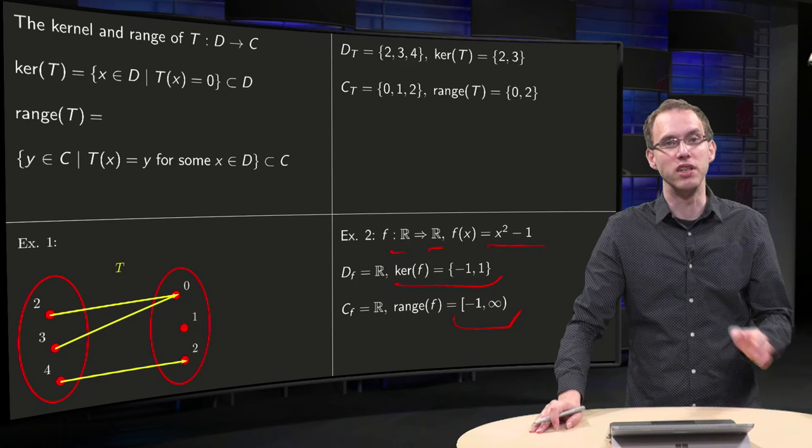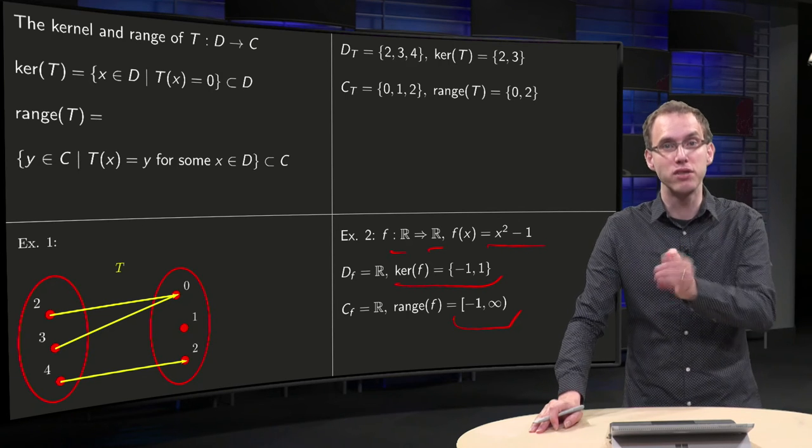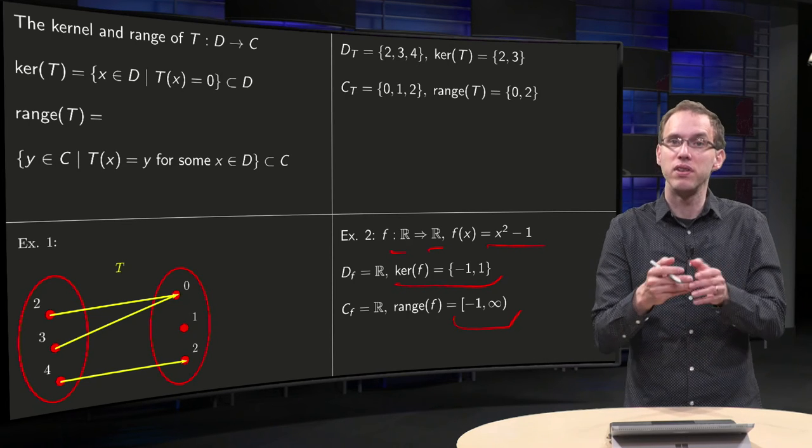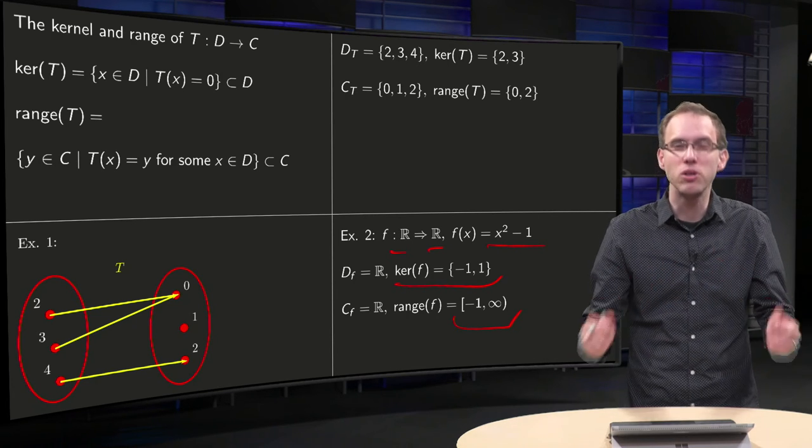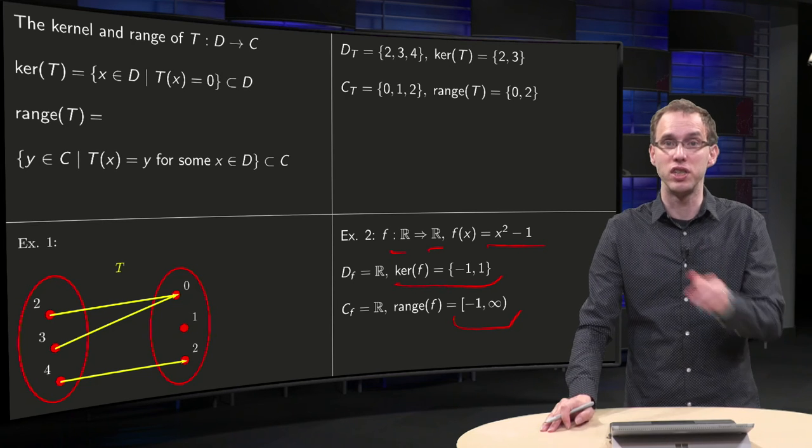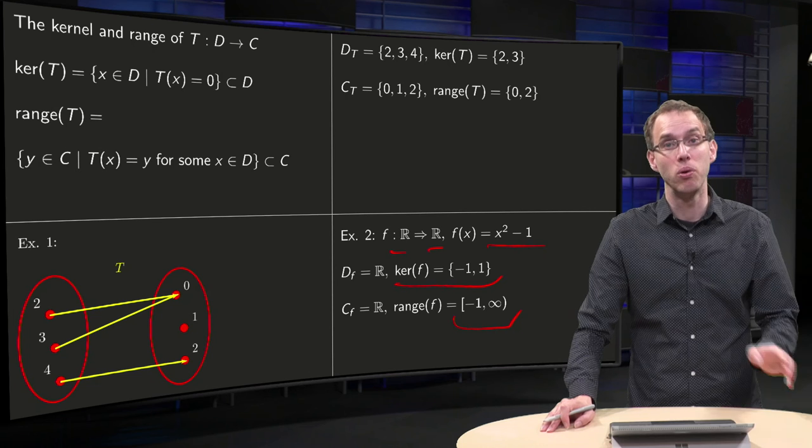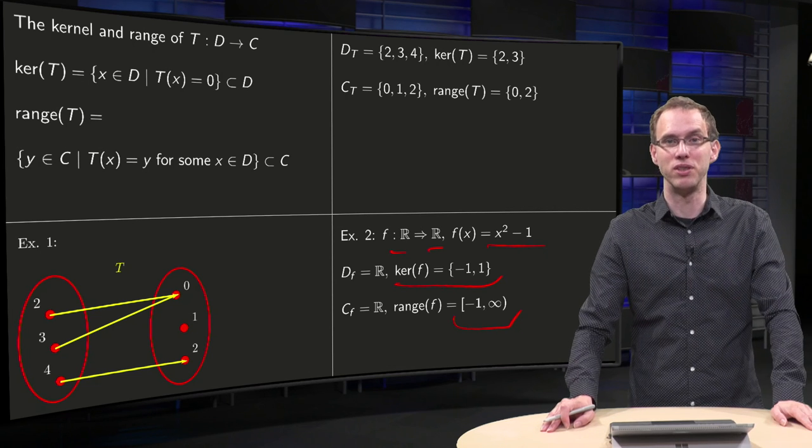Now you have seen what kernel and range of your function are, and you will see that even in this not so difficult example, f of x equals x squared minus 1, you already have to be quite careful if you want to determine the kernel and range of your function.